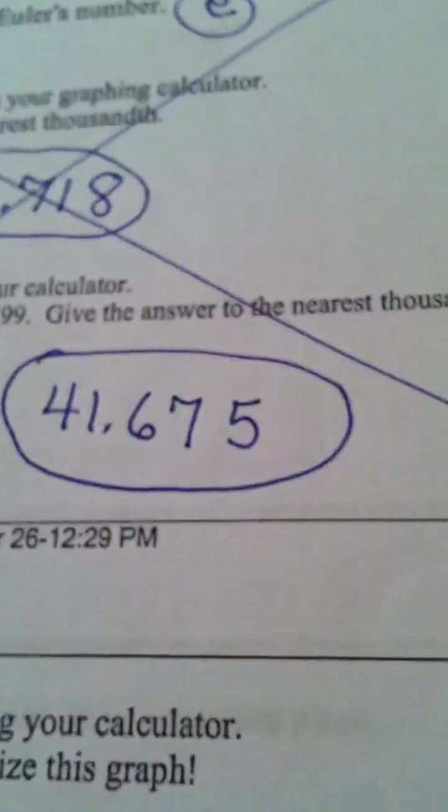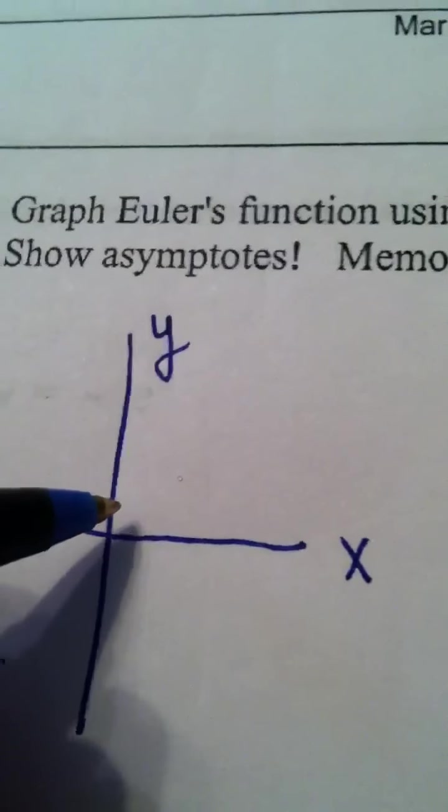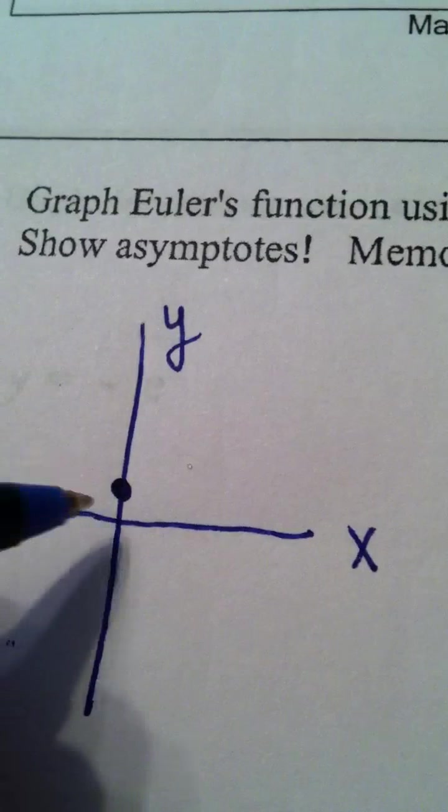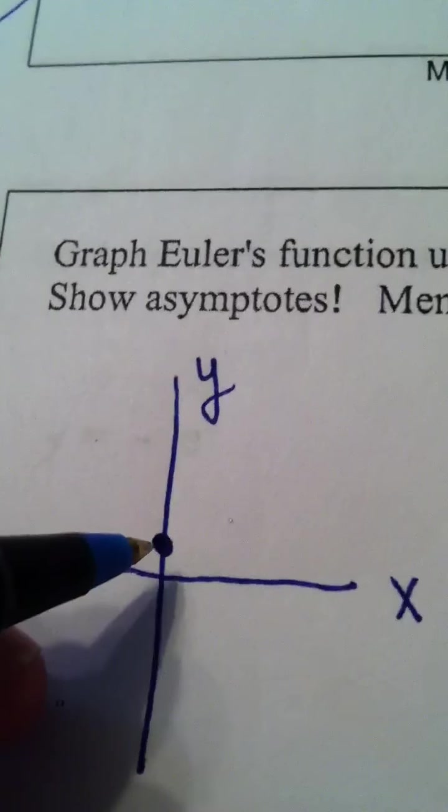When I transfer my graph to my paper, Euler's function crosses the y-axis at the ordered pair 0, 1. Part of the reason you know that, if I put in a 0, e to the 0 power is 1. So the ordered pair 0, 1 is on this curve.